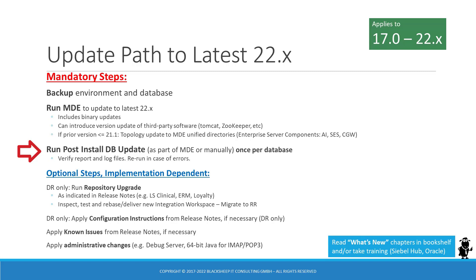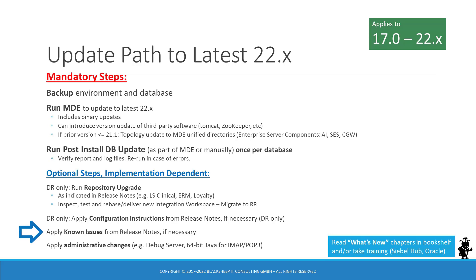It's mandatory to run the post-installed database update, which can be run automatically as part of the MDE or manually after the MDE is finished copying the binaries. This has to be executed once per database and imports schema changes, seed data, and Open UI manifest data into the target database. Make sure to verify the report and the log files and rerun in case of errors before you continue. There are also optional steps: the repository upgrade utility is optional and can be run only against a development database. It should be run only if you intend to uptake the non-mandatory changes made by Oracle, such as the recent CrowdTwist integration. The release notes also contain configuration instructions and known issues with workarounds you may need to apply.